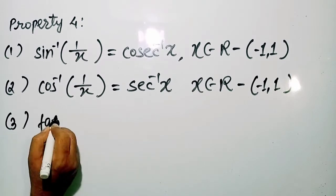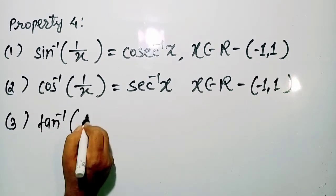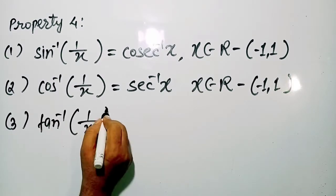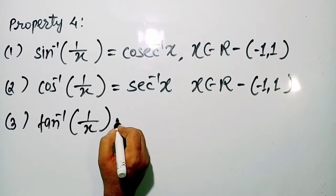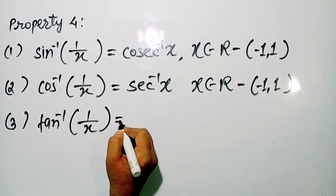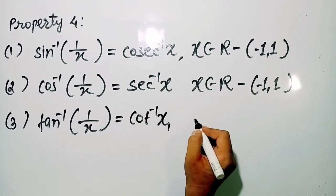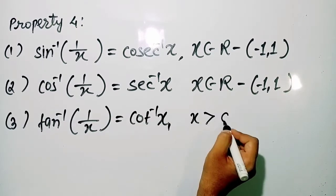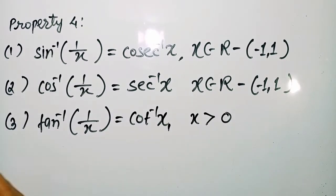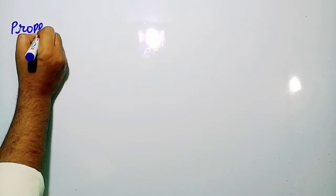Third, tan⁻¹(1/x) = cot⁻¹ x, where x is greater than 0. Right students, these are the fourth properties of inverse trigonometric functions.